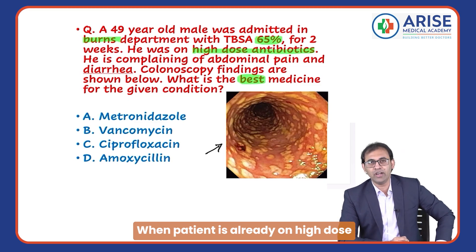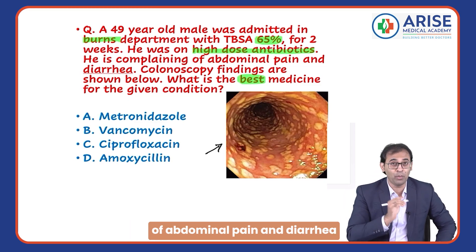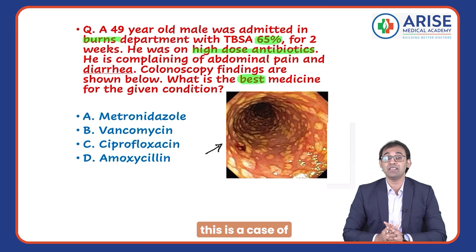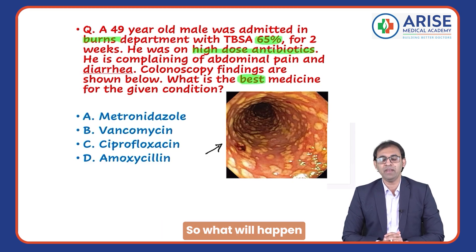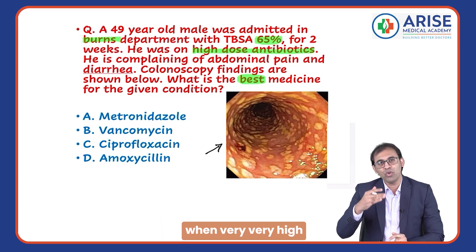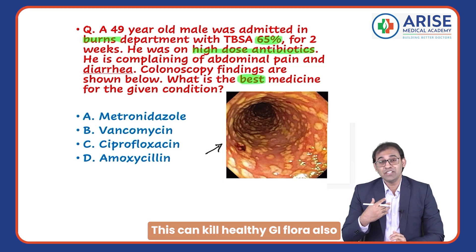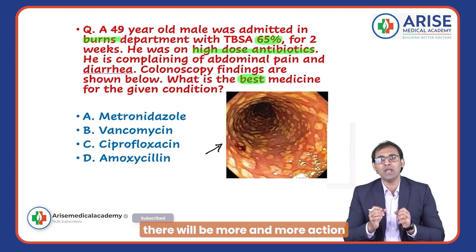When the patient is already on high-dose antibiotics and complaining of abdominal pain and diarrhea, this is a case of antibiotic-induced diarrhea. What will happen when very high doses of antibiotics are given? This can kill healthy GI flora as well.